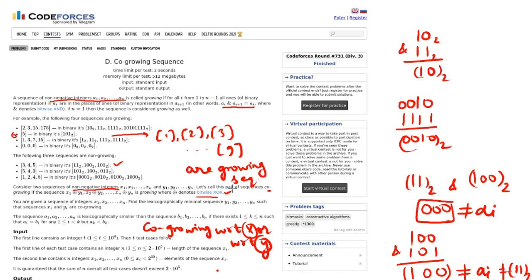Now you are given a sequence x1 to xn. This is the input. And find the lexicographically minimal sequence yi such that the sequences xi and yi are co-growing.